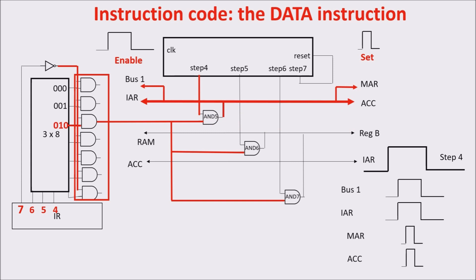The content of IAR, now on the bus, is the address of the next instruction, so in this case it is the address of the byte we want to put in reg B. Remember, in one RAM cell there is the data instruction, and in the next RAM cell there is the byte to be loaded. So IAR now on the bus contains the address of the byte to be loaded. For this reason, we give a set pulse to MAR to open the right cell. We also activate bus 1 to increment IAR by 1, and give a set pulse to the accumulator to store this result, in order to point to the next instruction coming after the byte to be loaded.